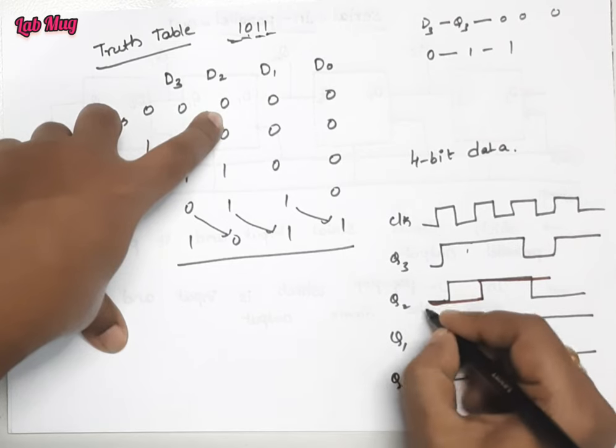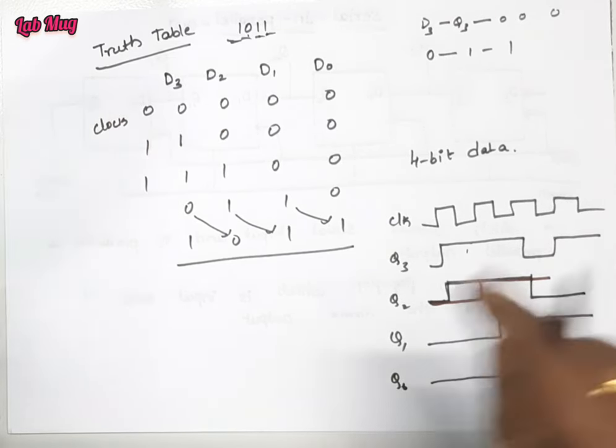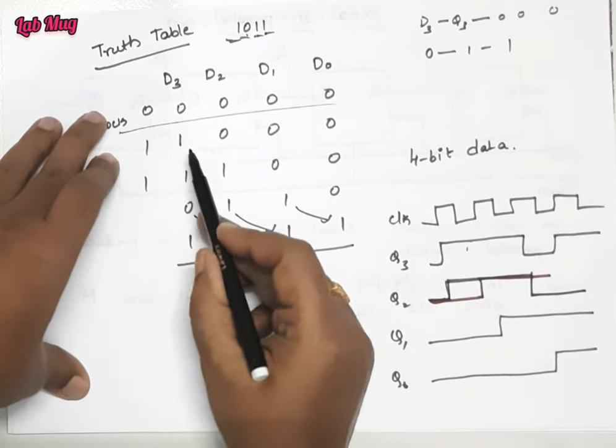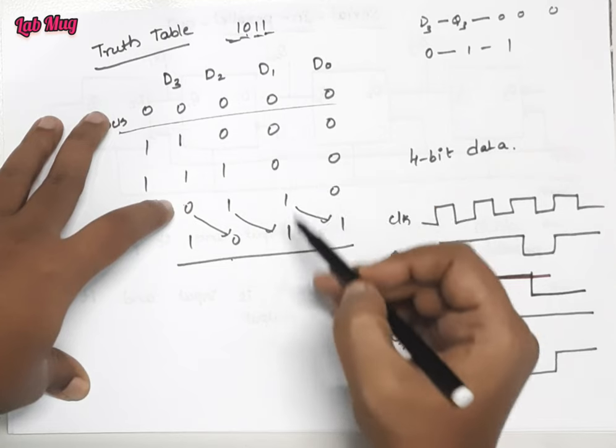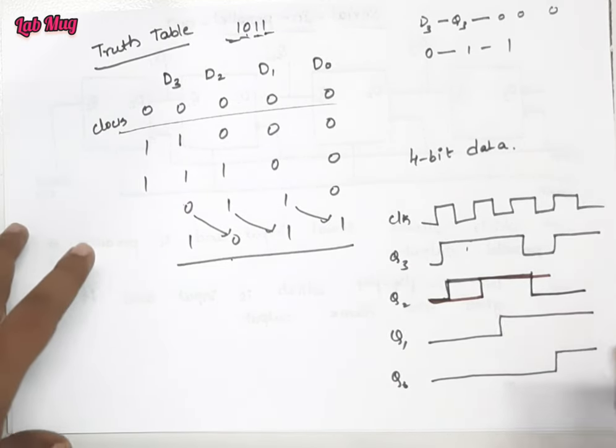First mistake there. A little bit confused. I think it's a mistake. So first we draw that. Let me observe, one one zero one, zero one one zero, zero zero one one, zero zero zero one. So this is the waveform for the serial in parallel out shift register. Thank you.